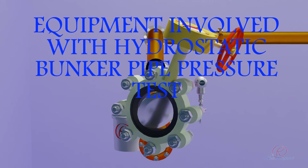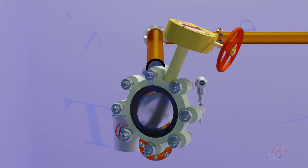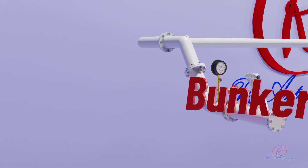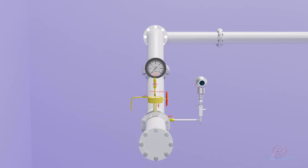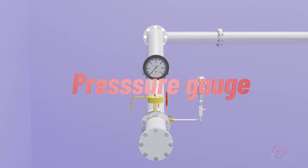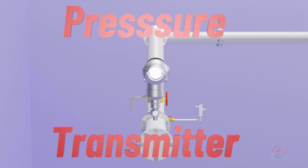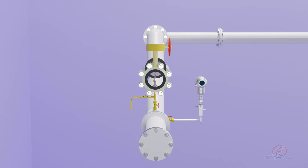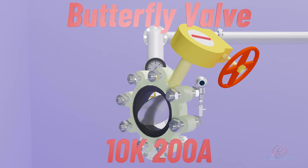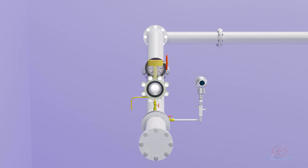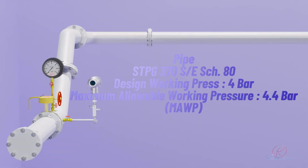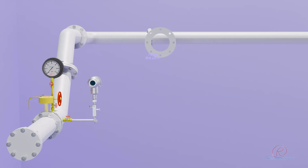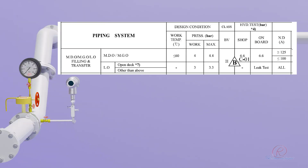Equipment involved with the hydrostatic bunker pipe pressure test. At the bunker manifold, there are pressure gauges, pressure transmitters, and butterfly valves. The pipeline is HDPE schedule 80 with a design working pressure of 4 bar. Maximum Allowable Working Pressure is 4.4 bar. Flanges are 10 kg, 200A.